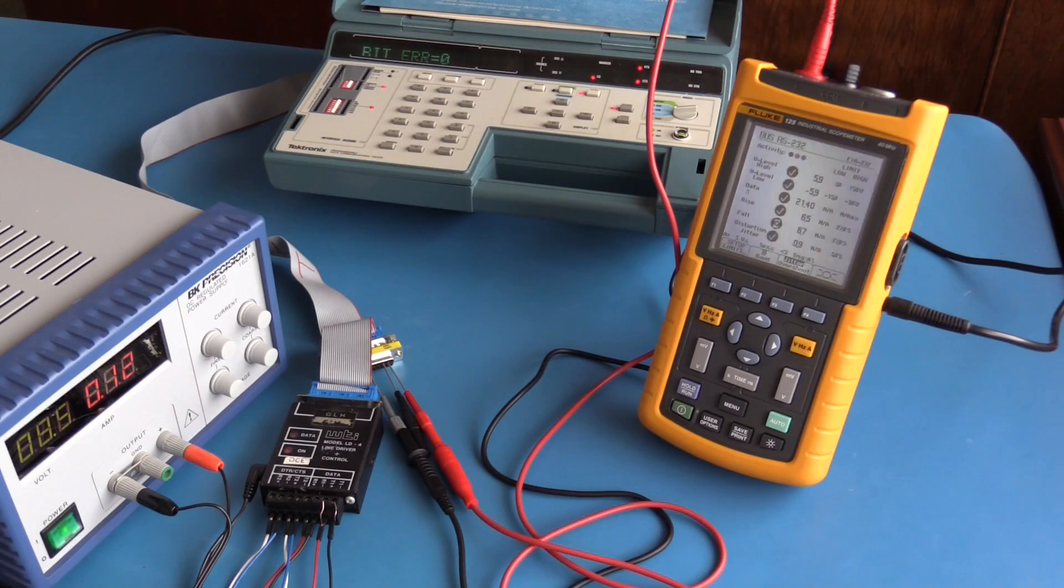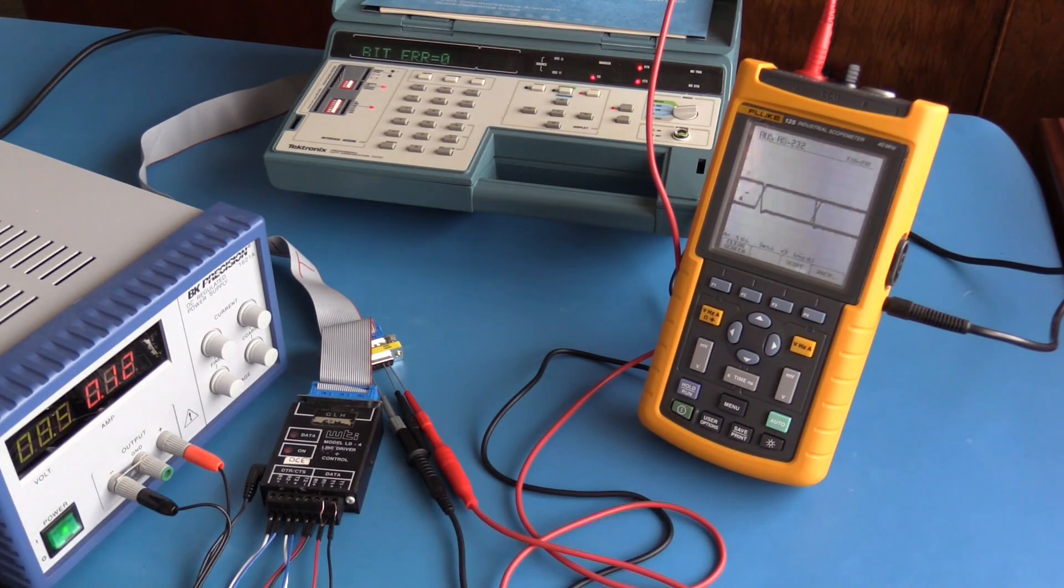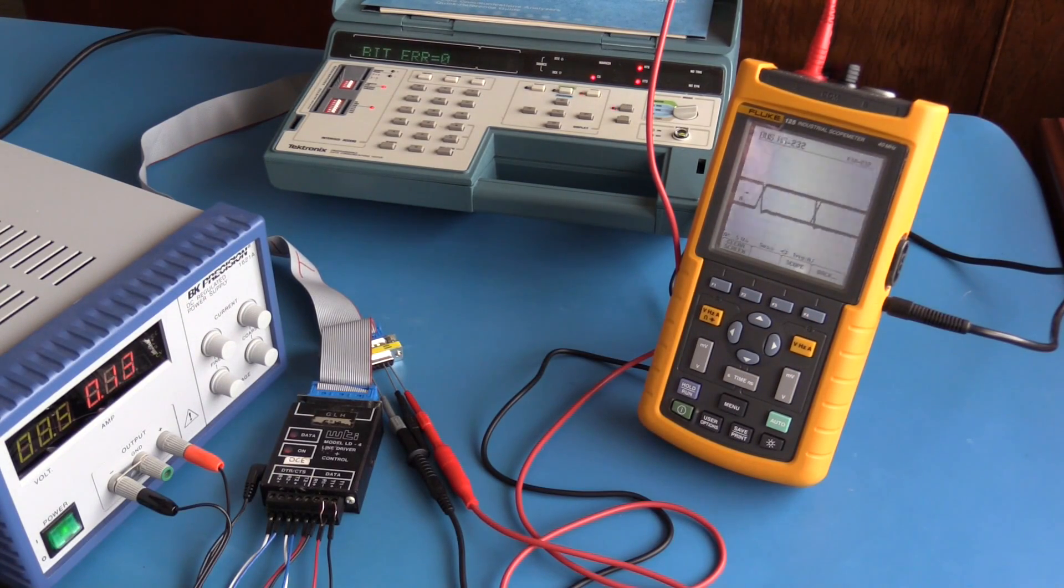We also have the option to look at the eye diagram. This gives us a graphical representation. We can see the signal has very little jitter.